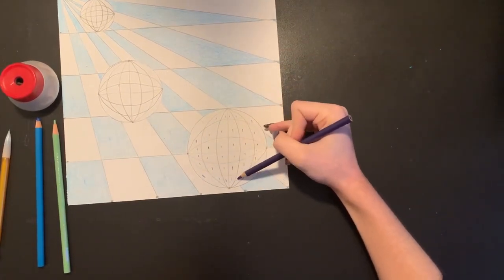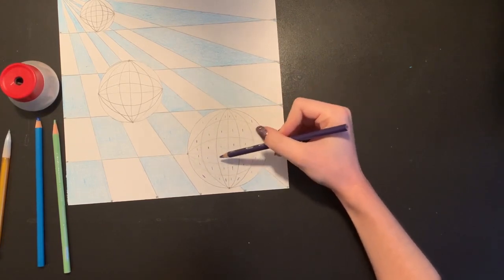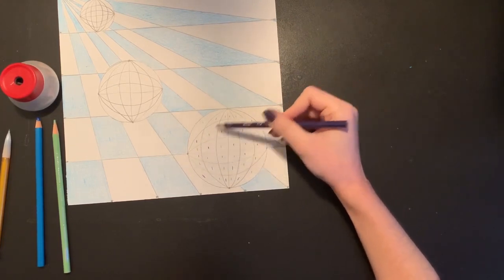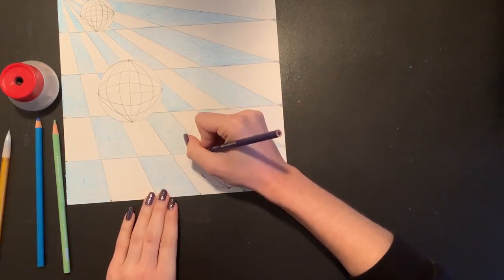And before I start to color, I'm just going to check it one last time and make sure that it looks good. I have purple, green, purple, green, purple, green alternating all the way through. That looks good.